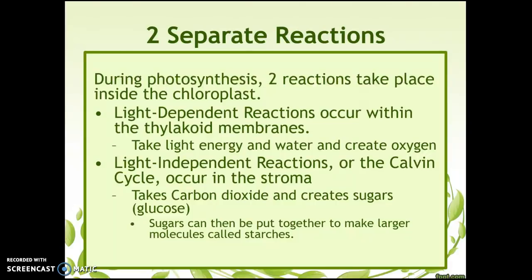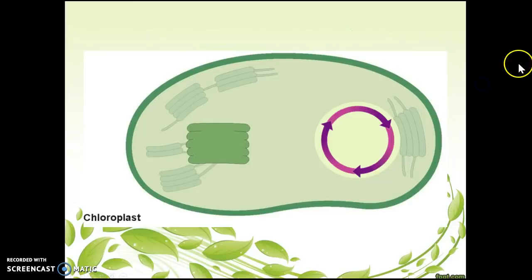Once glucose is created, it is put together to make larger molecules called starches. Sugars are simple carbs and starches are complex carbs. The only difference between simple and complex is how many are strung together — simple sugars only have a few strung together, while complex carbs have a ton of them strung together.